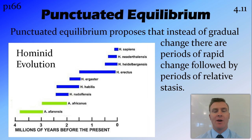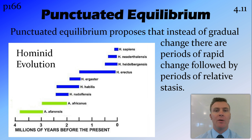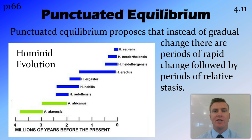This punctuated equilibrium can be seen in hominid evolution, where we have a number of different types of hominids; however, there aren't any transitional forms linking them together — or the missing links, as we refer to them in evolution.